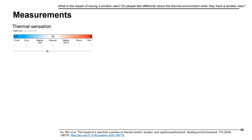For thermal sensation and comfort measurement, we deployed a survey questionnaire. One example is thermal sensation: 'Right now, how do you feel?' Participants could move a slider from minus three to three to answer. We compared how they felt in the window condition versus the no-window condition.